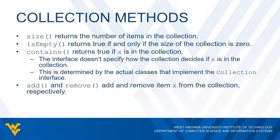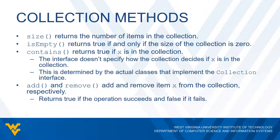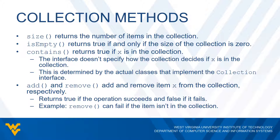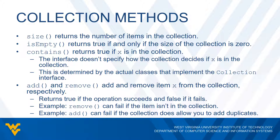Both add and remove return true if the operation succeeds and false if it doesn't. For example, remove could fail if the item is not in the collection and would return false. The add method could fail if we have a rule that says we can't have duplicates — so if we try to add a duplicate and that fails, the add method would return false.